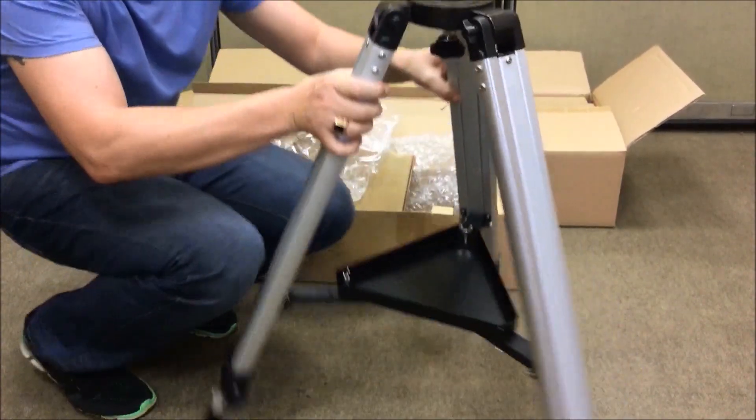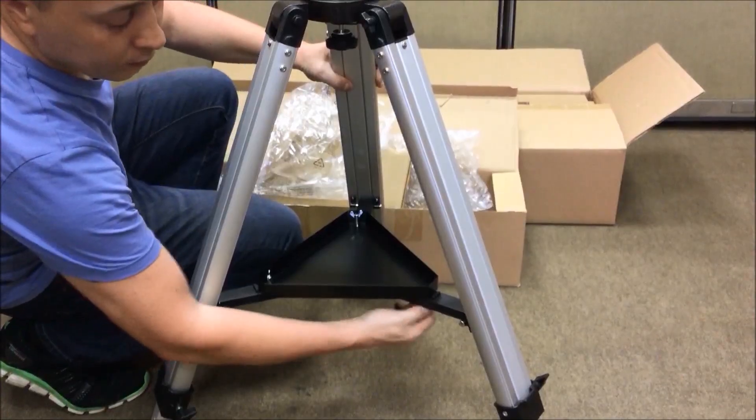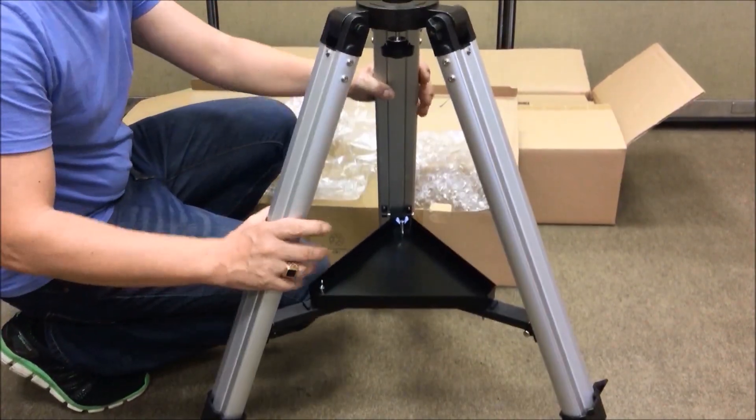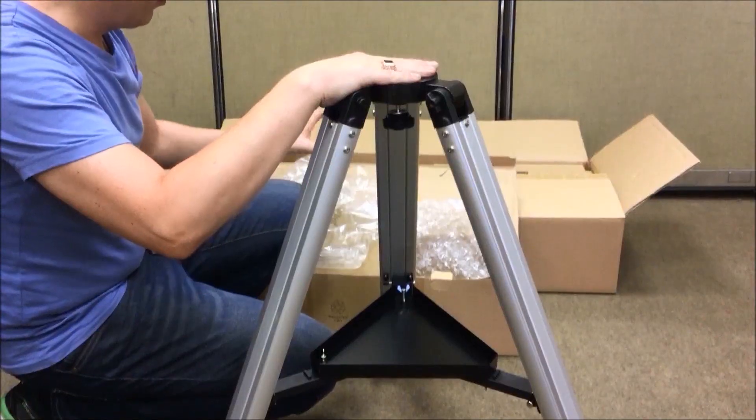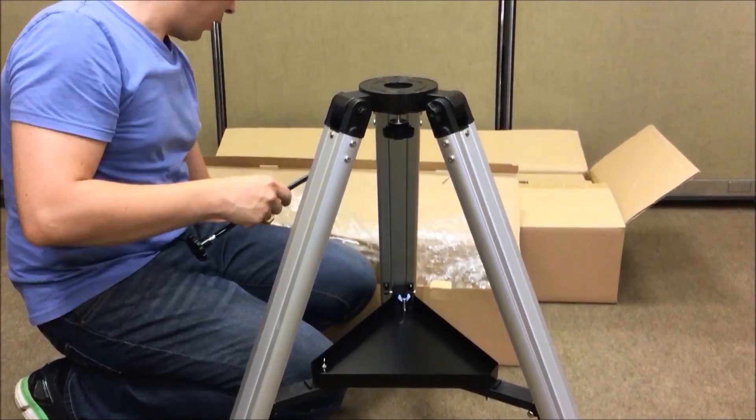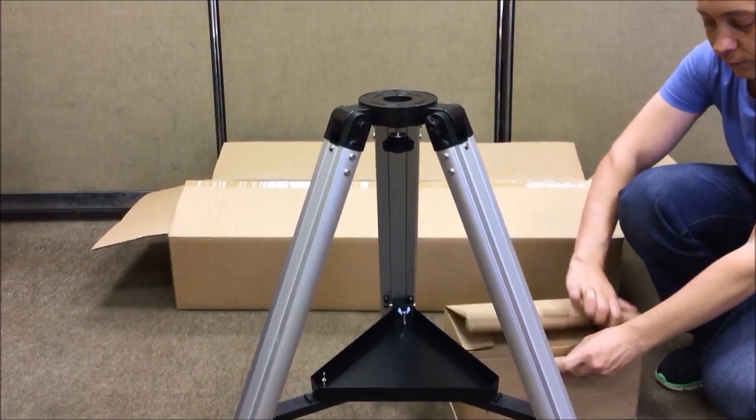The two remaining screws should be fastened the same way. Remember that you need to screw in the three thumb screws slightly first and only then tighten them fully. Now we install a mount right here on the tripod. There are also slow motion controls in this box. We will attach them later.